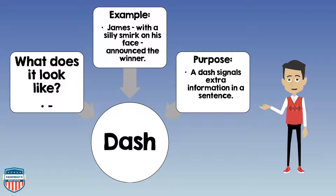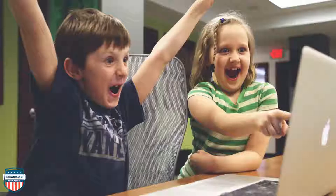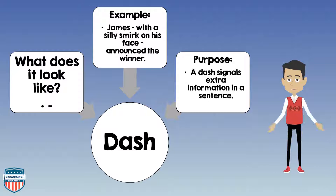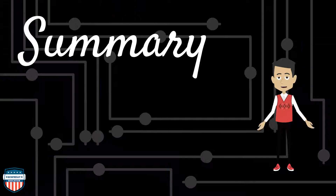Now, let's discuss the dash. What does a dash look like? It's just a straight horizontal line. Here's an example of a dash in use: James — with a silly smirk on his face — announced the winner. The purpose of a dash: it signals extra information within a sentence.